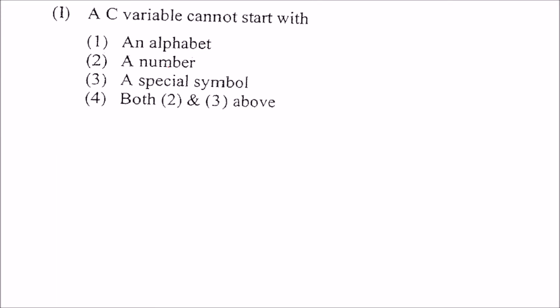A C variable cannot start with. It cannot start with. A C variable can start only with a, only with say, an underscore or an alphabet. So, the answer would be this. Both 2 and 3 above. Means, a number, a special symbol. But, this special symbol, if it is underscore, then it is allowed. So, we are just assuming that this special symbol is not underscore. Then only this, this is the correct answer.